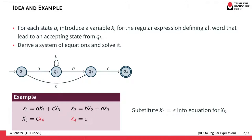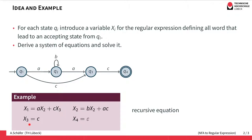Now we are ready to solve the equations. First, we substitute x4 equals epsilon into the equation for x3, and we get that the language accepted from q3 is 'c' concatenated with epsilon, which is 'c'. So the language accepted from q3 is expressed by the regular expression 'c'. This result for x3 can be substituted into the equation for x2. We obtain x2 equals bx2 plus ac, and we realize this equation is recursive, so we need a means for solving these kinds of recursive equations.